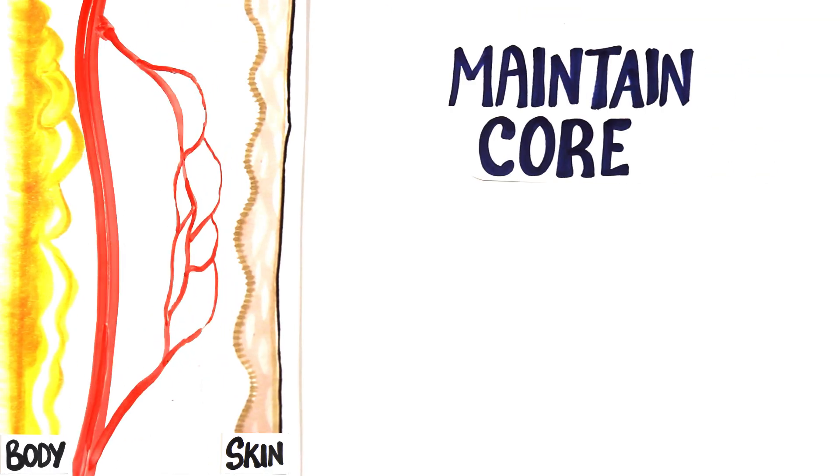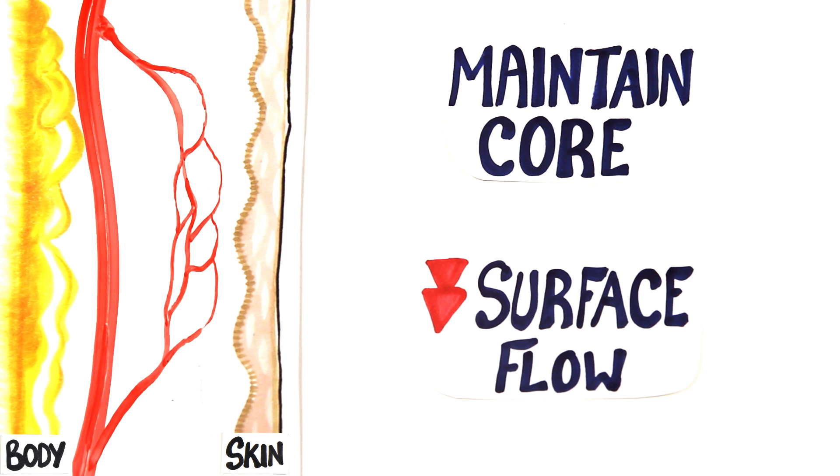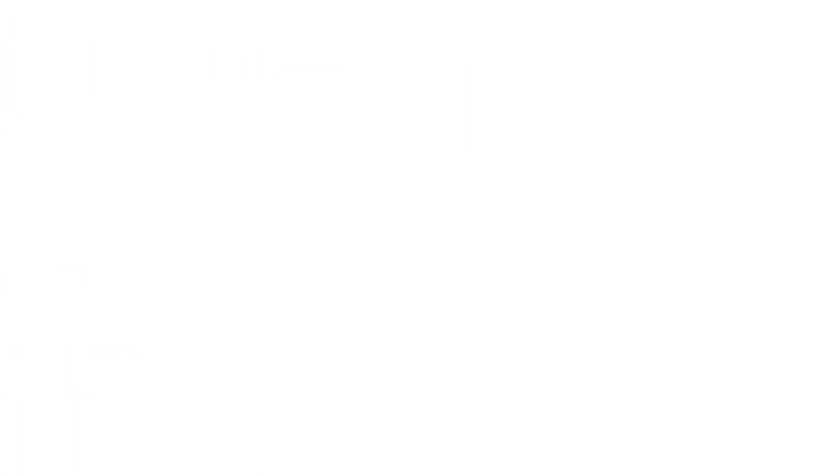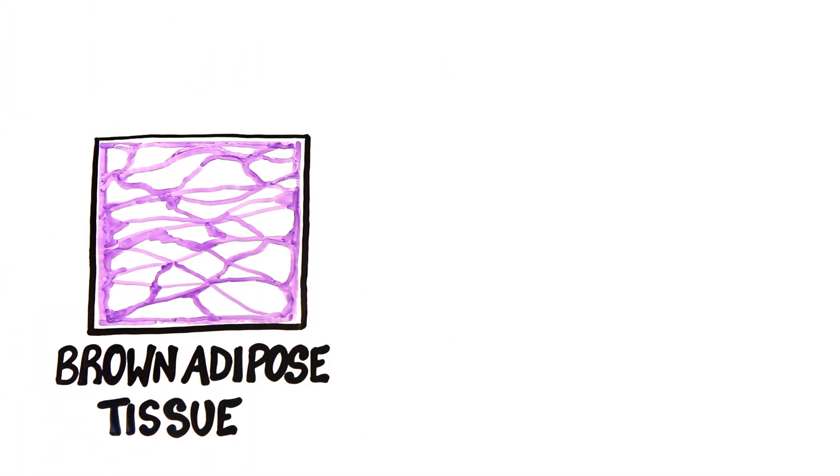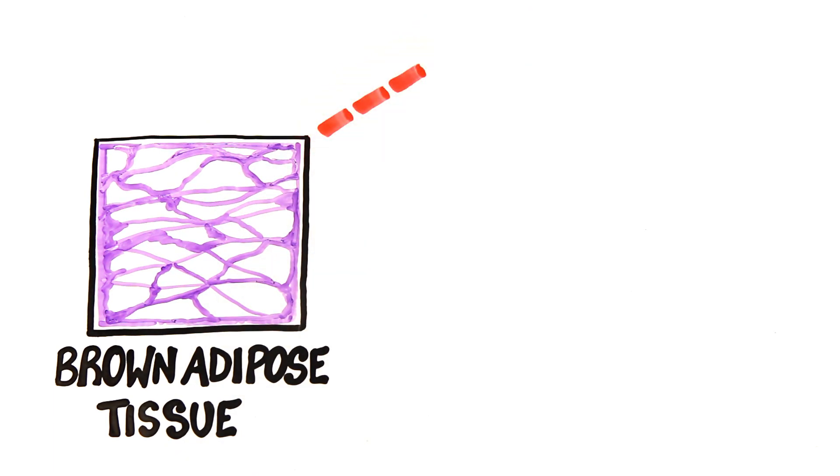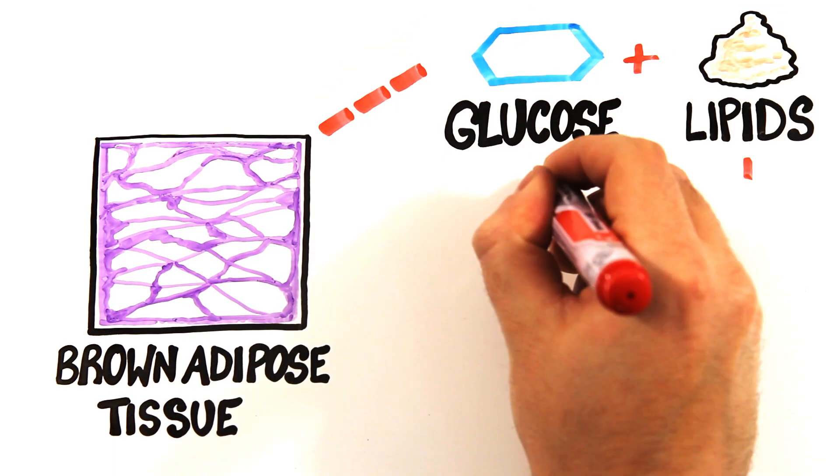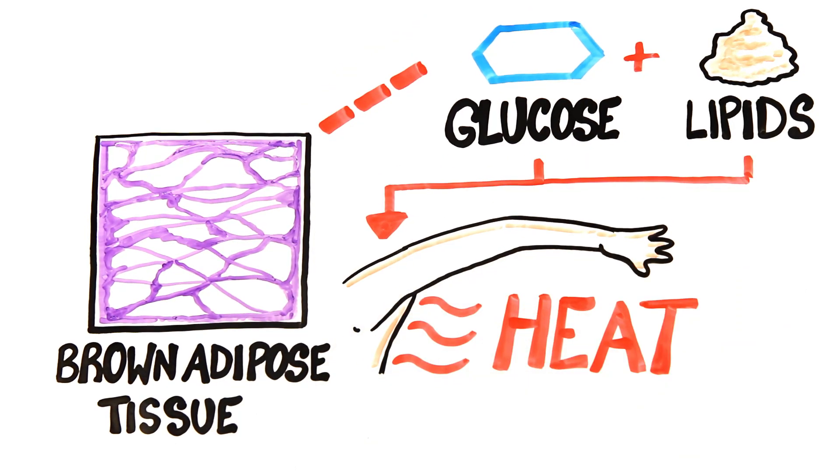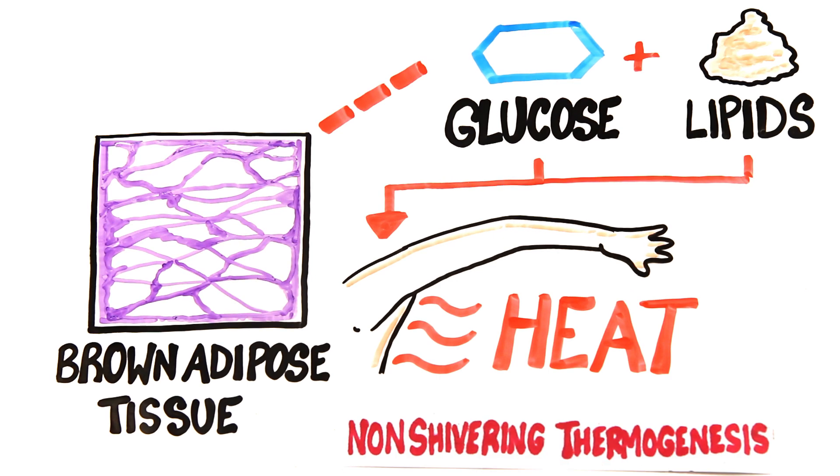First, the blood vessels in our skin narrow, allowing the body to maintain its core temperature by reducing the blood flow on its surface, known as vasoconstriction. Additionally, brown adipose tissue located throughout the body also activates, using high levels of glucose and lipids to produce heat via a process called non-shivering thermogenesis.